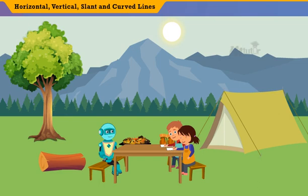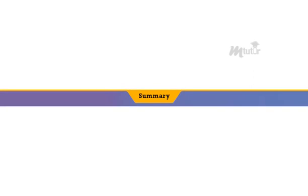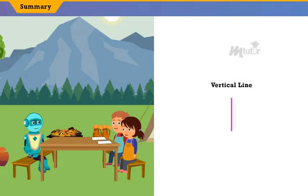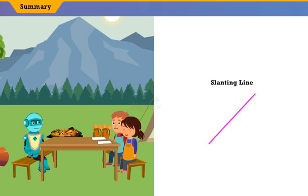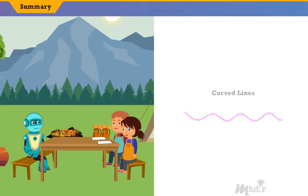Now, can you recall what you have learned today? Sure. Summary: We learned that vertical lines go straight up and down, or top to bottom, without going across. Horizontal lines go across from side to side, without going up or down. Slanting lines go at an angle — they look like a slope. And curved lines are those that are not straight.